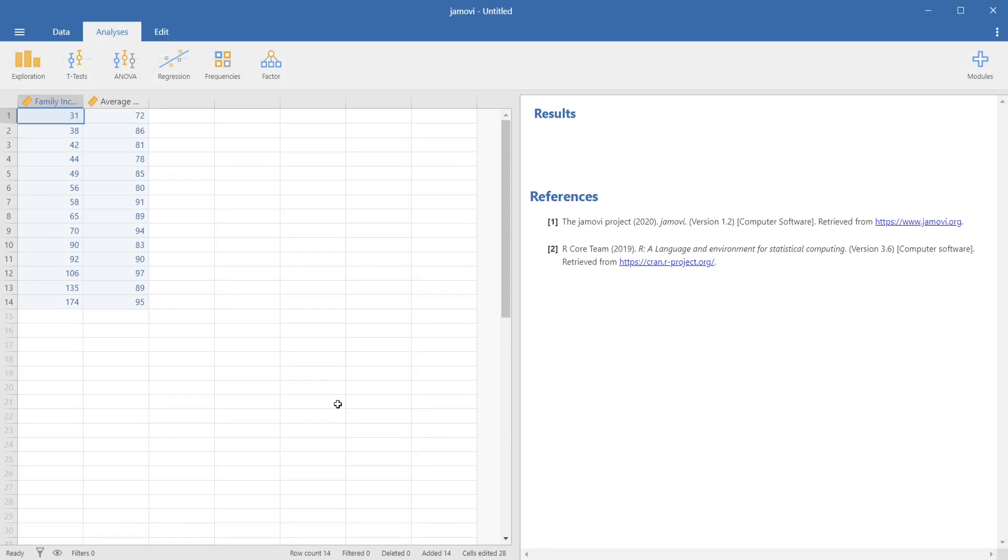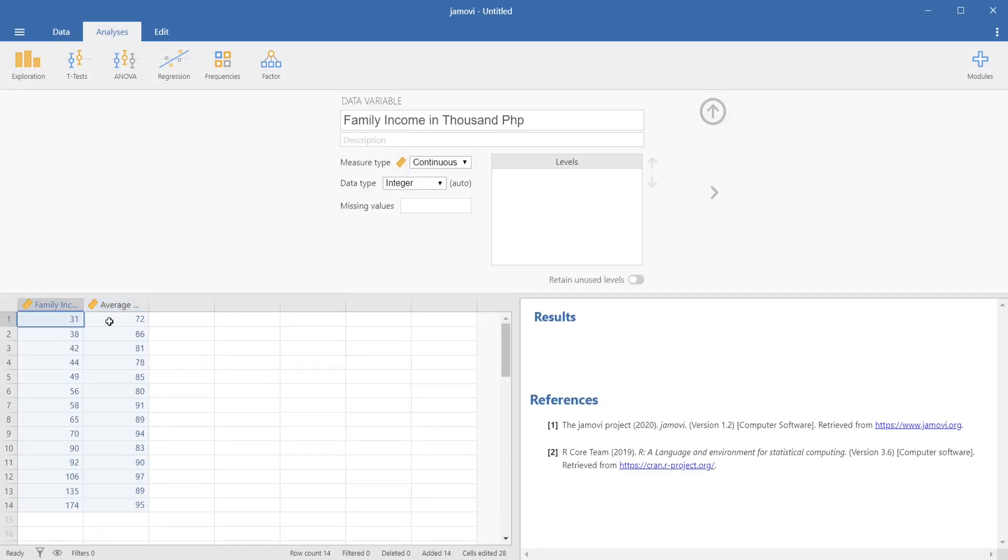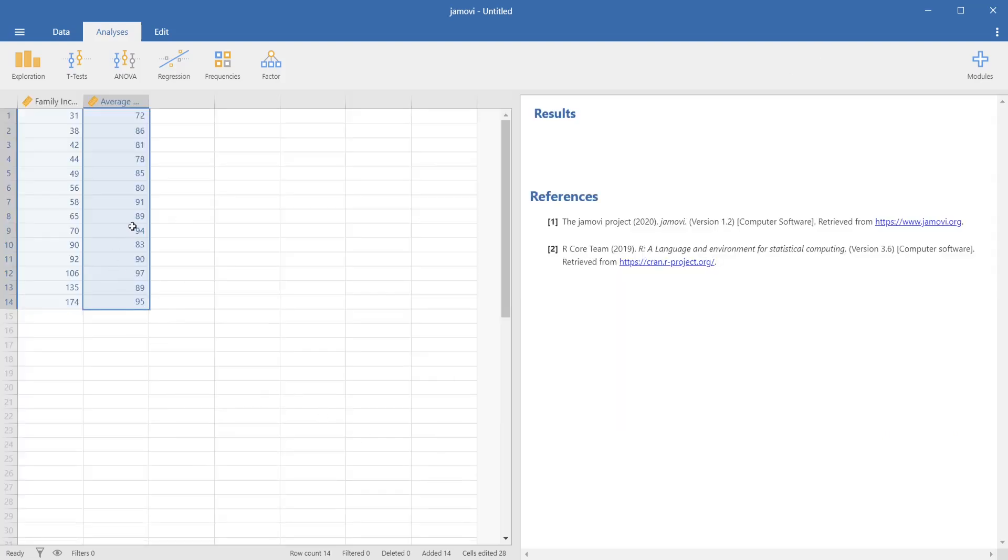Now we are looking at Jamovi and you have a dummy data here that I encoded. Let me show you the details of these variables. The first variable is family income in 1,000 PHP or 1,000 Philippine pesos. This would be their monthly income. Basically, the first family, they only make 31,000 monthly. The last family here, they make 174,000 every month. This would be continuous. It falls on the ratio. On the other hand, our second variable would be the average grade of the student. And grade usually is considered interval. So, that would also fall under continuous. Now that you know the details of our variables, we are now ready to run the analysis.